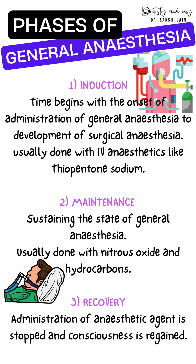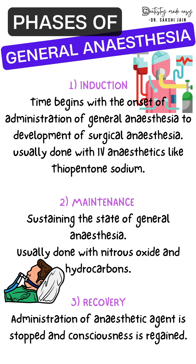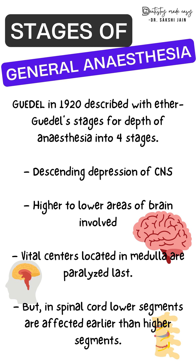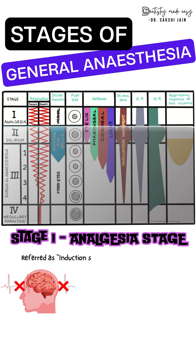Now for the main part — the stages. Dr. Arthur Gudel developed four stages of general anesthesia, which were developed by giving a patient morphine and atropine as pre-medication followed by inhalation anesthetic ether. General anesthesia causes descending depression of the central nervous system — higher brain functions are lost first, lower spinal cord segments are affected first, and lastly vital centers in the medullary centers are paralyzed.